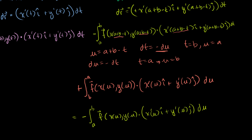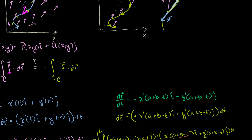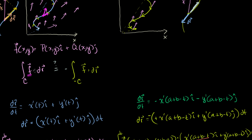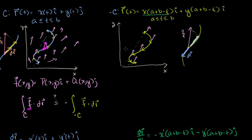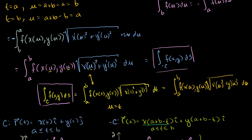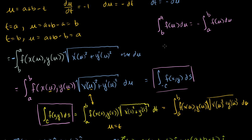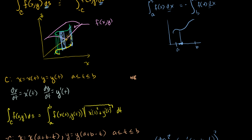To summarize: when dealing with line integrals over vector fields, direction matters. If you traverse the path in the reverse direction, you get the negative of the original integral — because at each point the dot product with dr flips sign. But for scalar field line integrals, as we saw in the last video, the direction doesn't matter; the positive and negative paths give the same value, since we're just finding the area of that curtain.